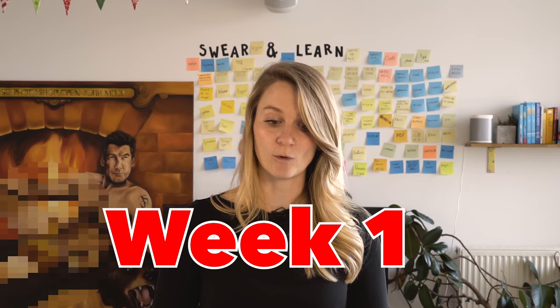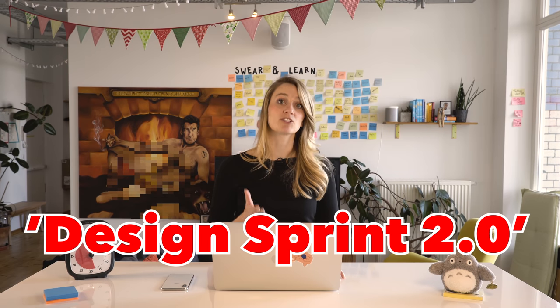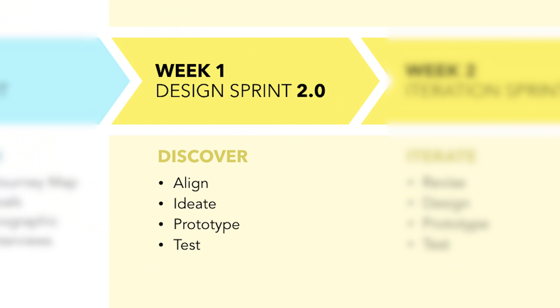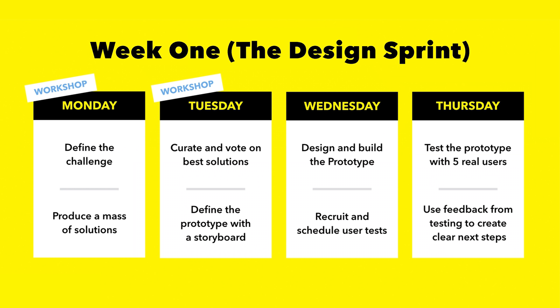Then we move into Week One, which is the actual first Design Sprint — the Design Sprint 2.0. This is the week-long process where we come together, align on the challenge, ideate and come up with solutions, make a decision, prototype that thing in one day, and then test it the following day with five users. At the end of Week One, we also have a day for synthesizing the data — that's the Friday where we take everything from the test and figure out what we learned: what worked, what didn't work, what we'd like to move towards, where we should iterate to.